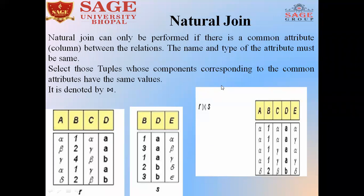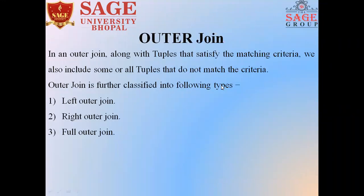Now we are going to learn about outer join. In an outer join, along with tuples that satisfy the matching criteria, we also include some or all tuples that do not match the criteria. In two different relations that share some common attributes, there is a possibility that some values will be uncommon in both tables. Based on this, we classify the join operation into left outer join, right outer join, and full outer join.